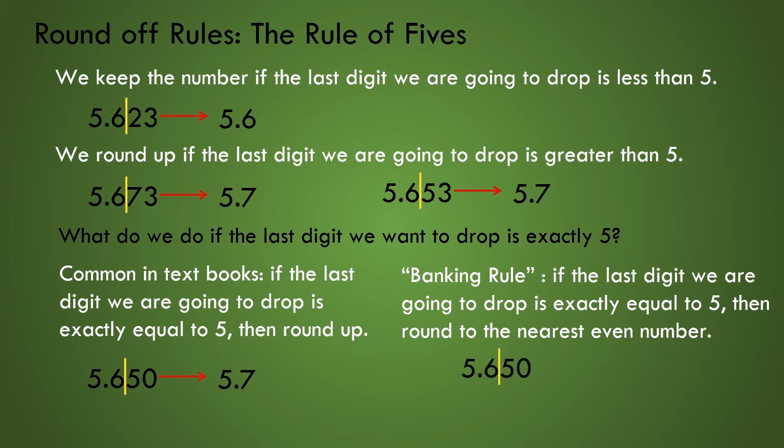Using this rule, rounding off 5.65 to the tenths place would round the number to 5.6, keeping the last number as an even value. Now if the number were 5.75, we would round up to 5.8, again rounding to the nearest even value.